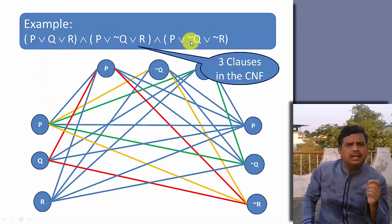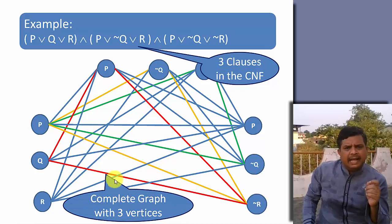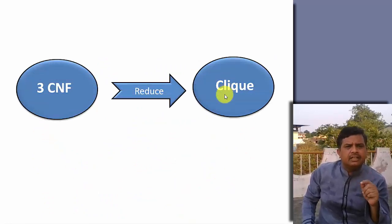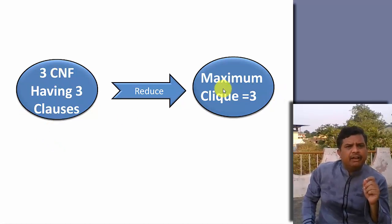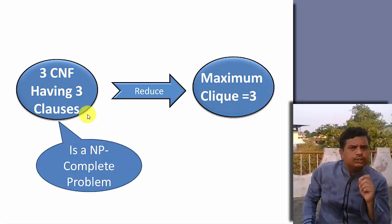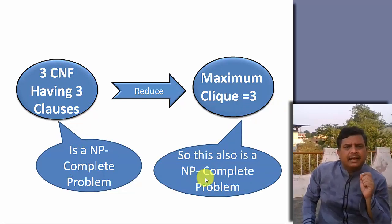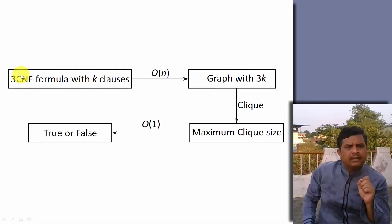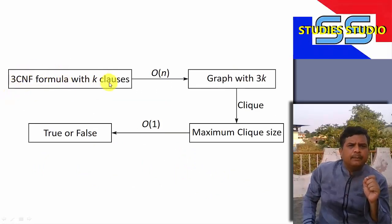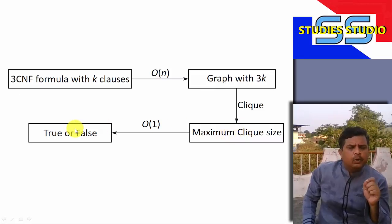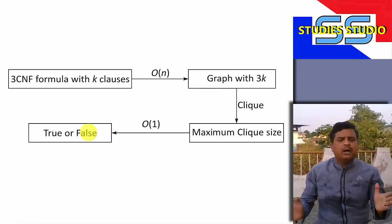In a 3-SAT problem, 3 clauses are given and the maximum size of the complete subgraph has 3 vertices, so the clique size is also 3. So if a 3-CNF is given, it reduces to a clique, and the 3-CNF having 3 clauses means the maximum clique size is also 3. We know that 3-CNF is an NP complete problem, so we can say that the clique problem is also an NP complete problem. The process we adopted: we took a 3-CNF problem with K clauses, it took O(n) time to form a graph, we found the maximum clique, and to verify it took O(1) time. This is how we have proved that the clique problem is NP complete.